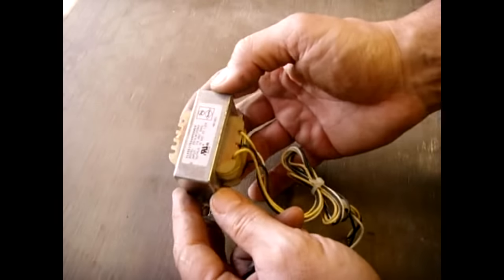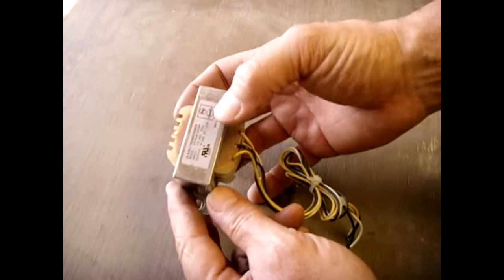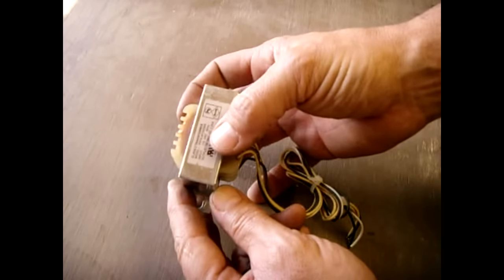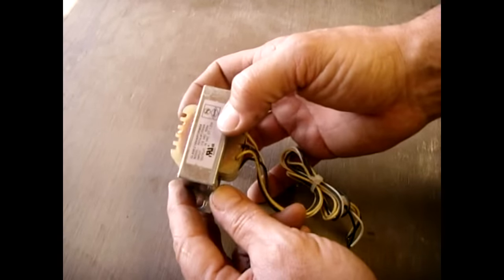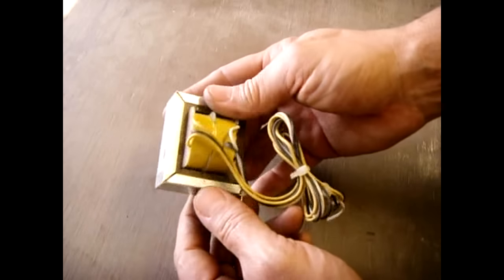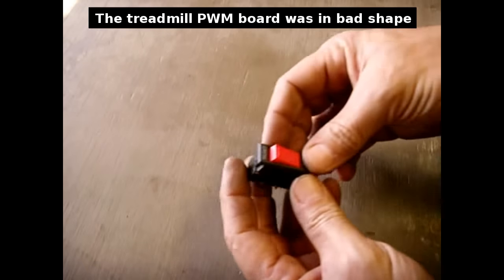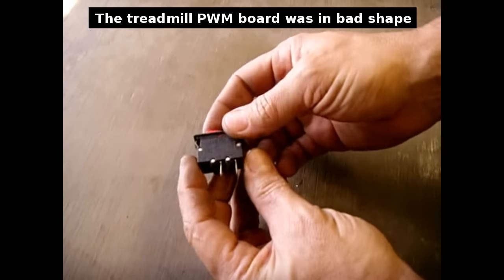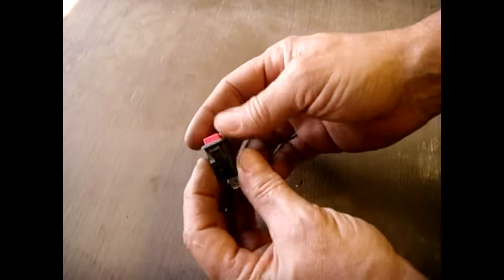I also got this out of the treadmill. A center tap transformer. 16 volt AC output. 115 volt AC input. And the current rating is one and a quarter amps. I'll find use for that. This switch right here, on-off. Got that out of the treadmill as well.